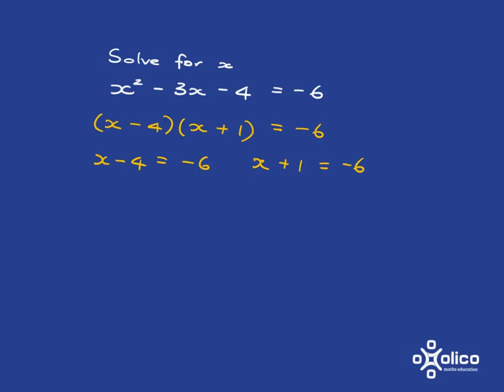But there's a big, big problem here. Because just because two things multiply together to give you negative 6, doesn't mean that one of them is negative 6. Because, for example, it could be negative 3 multiplied by 2, which gives you negative 6, or negative 2 multiplied by 3, which gives you negative 6. There's nothing that tells you that one of these things here has to be negative 6. It only works if you've got equal to 0 on the right.